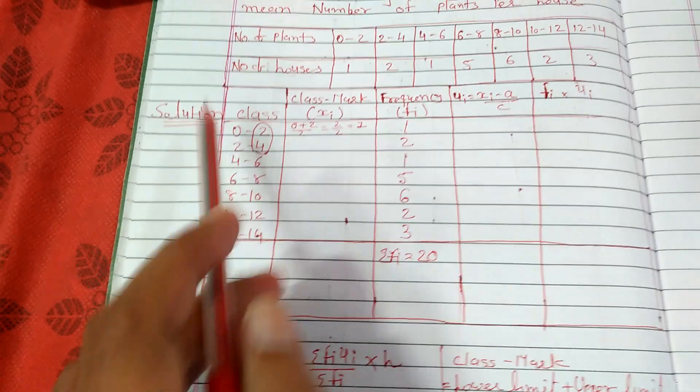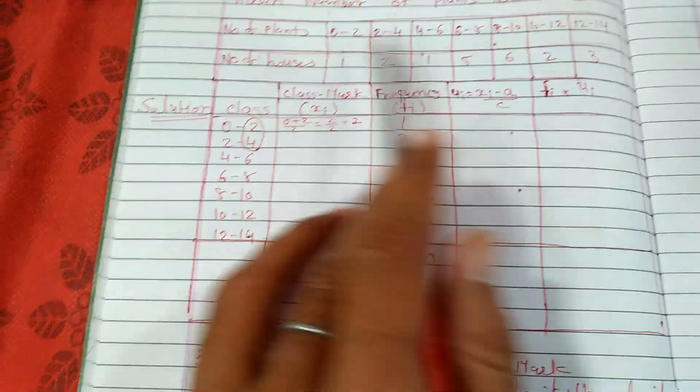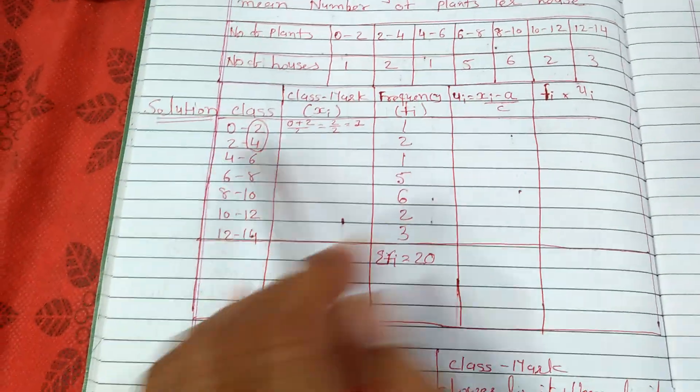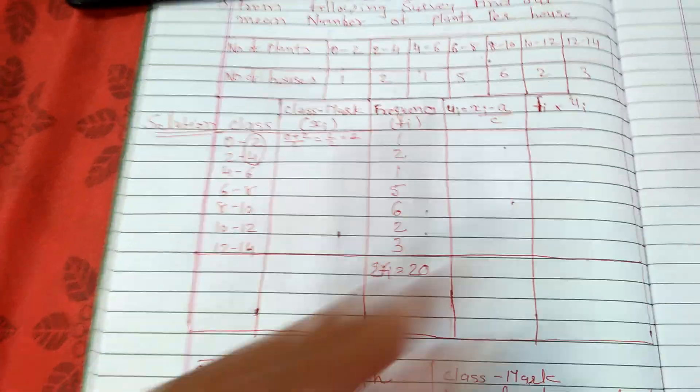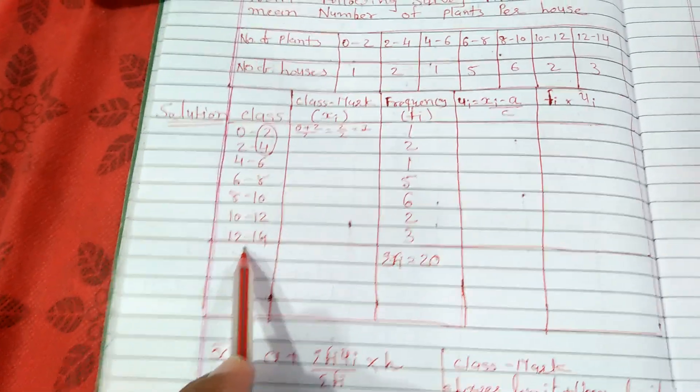The first column will be of class, which we take from the question itself: 0 to 2, 2 to 4, 4 to 6, 6 to 8, 8 to 10, 10 to 12, and 12 to 14.